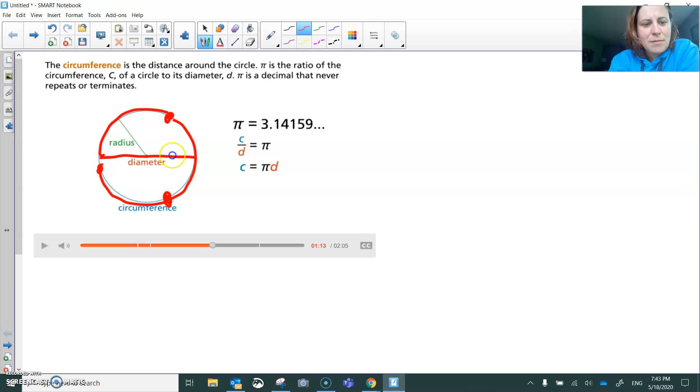So if you take the diameter, multiply it by 3, you'll get just short of all the way around the circle. If you actually multiplied it by 3.14, you would get exactly all the way around the circle.